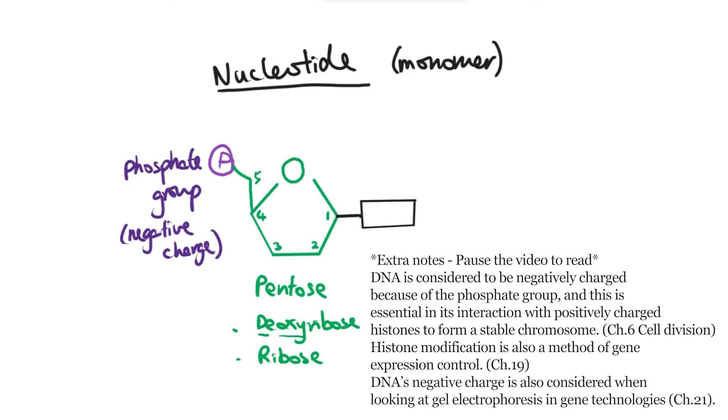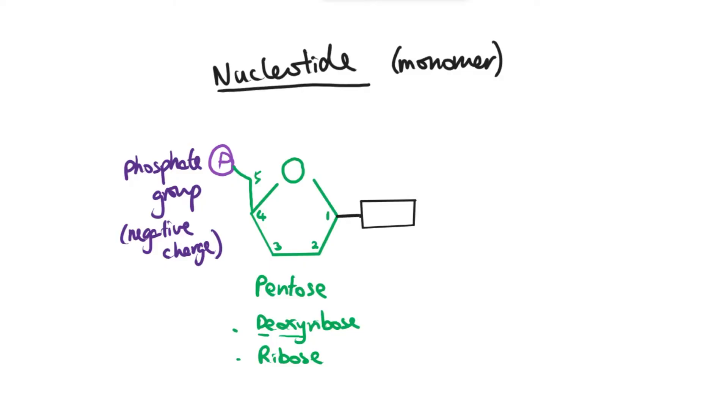That will become really important when it comes to understanding the structure of chromosomes when you learn about them in chapter 6 about cell division. If you're interested, phosphate group has a formula of PO4 3-. So that's the phosphate group there.